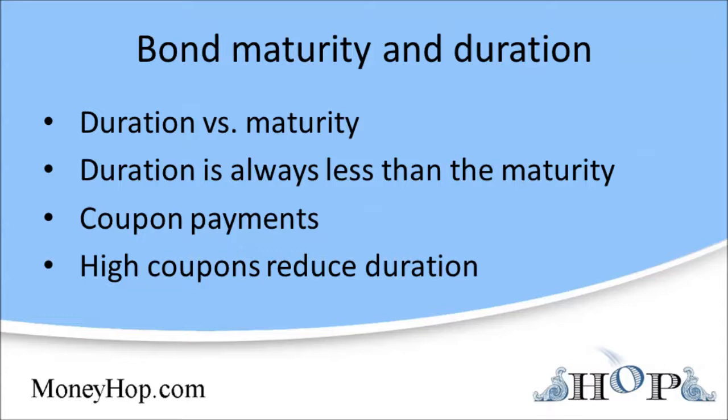But instead of looking only at maturity dates, many bond investors look at something called the duration of a bond to further quantify their interest rate risk. The duration of a bond is related to the maturity of a bond, but the duration is always less than or equal to the maturity. The duration of a bond is a sort of weighted average of all the future payments offered by the bond.